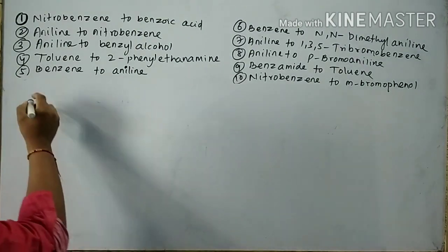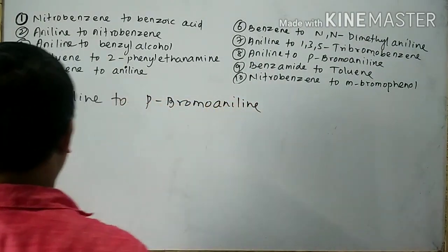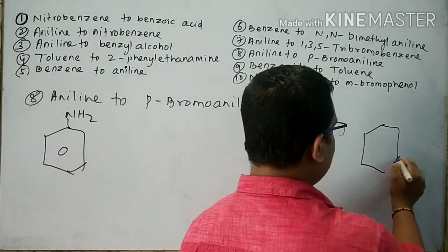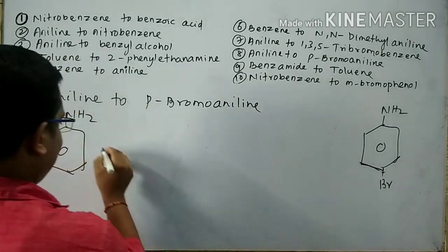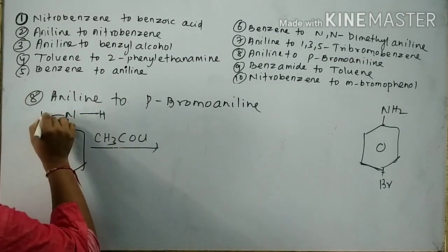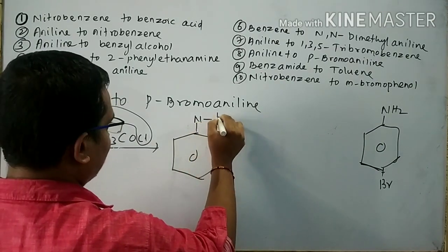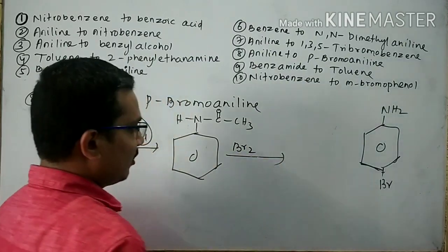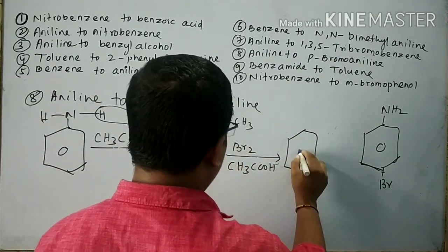Question number 8: Convert aniline to para-bromoaniline. First, aniline is subjected to reaction with acetic anhydride (acetyl chloride); with loss of one acid molecule, acetanilide is formed. Acetanilide is then subjected to bromination by reaction with bromine in acetic acid, then para-bromoacetanilide is formed.